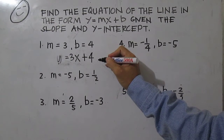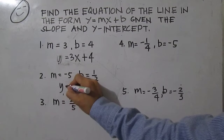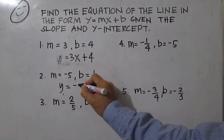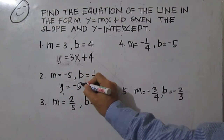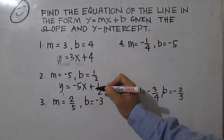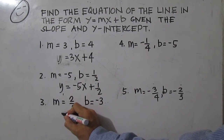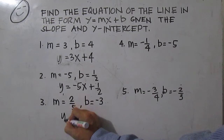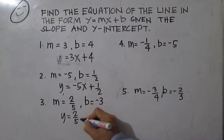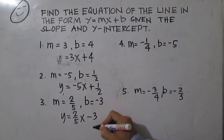For number 2, we have y equals negative 5x plus 1 half. Number 3, y equals 2 over 5x minus 3.